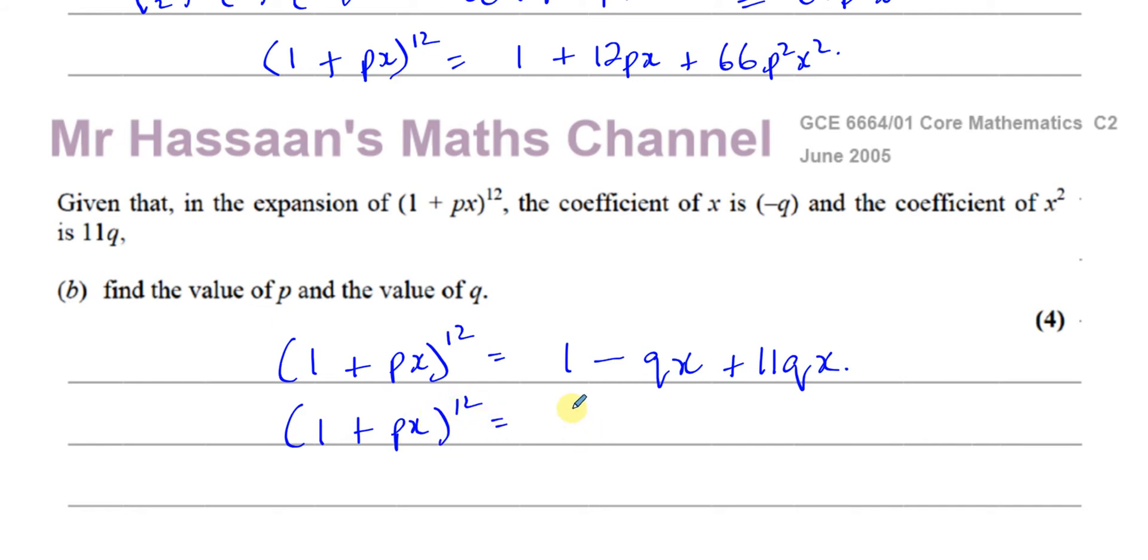And we found that we got 1 plus 12Px and plus 66P squared X squared. The coefficient of X squared is 11Q. Now what we can do is, we can, they want us to find the value of P and Q.